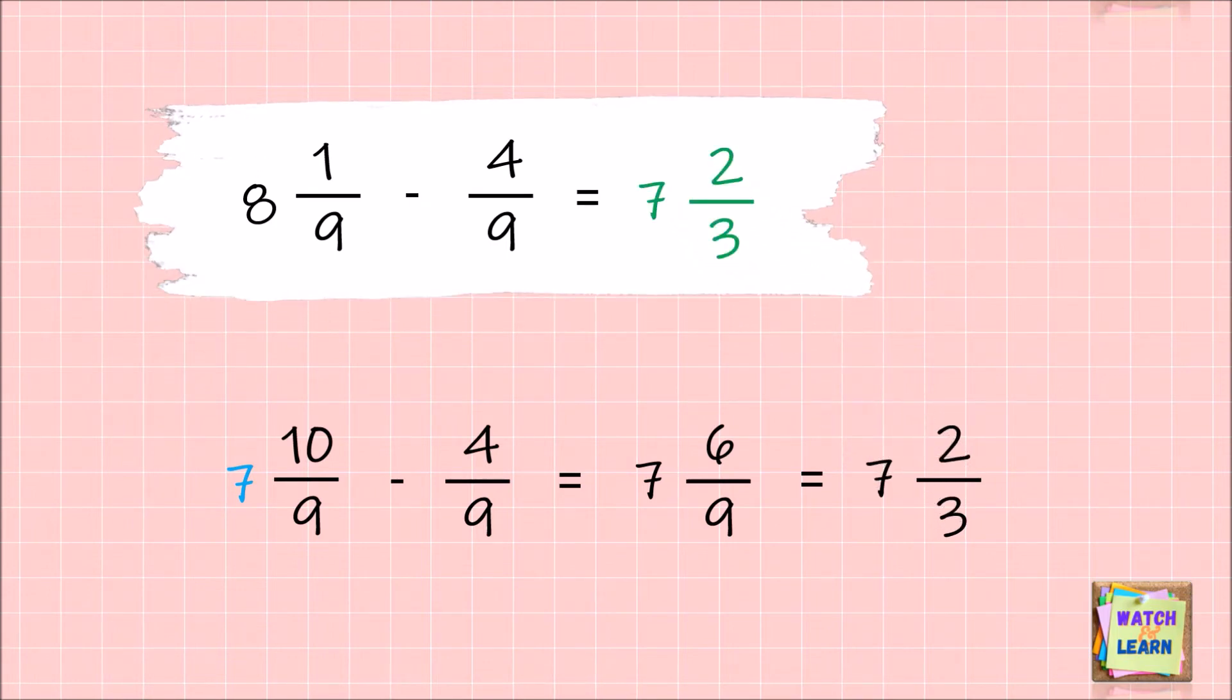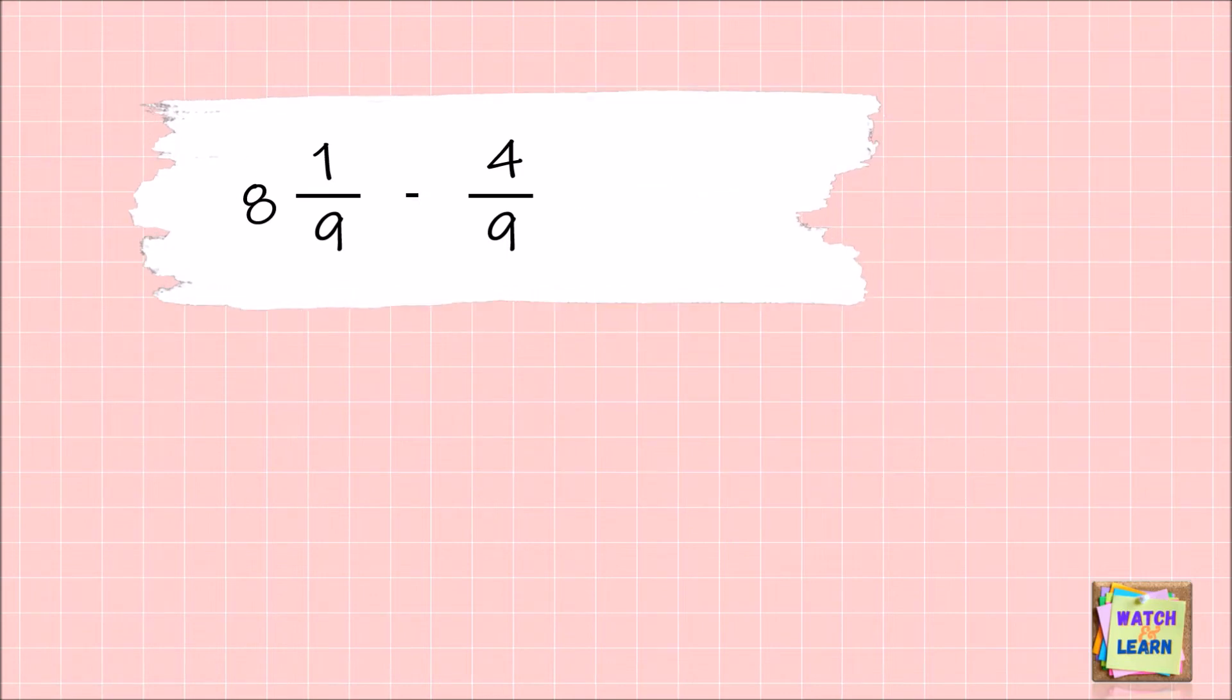But there is a simpler way to solve this problem. All you have to do is borrow one from eight, then add the denominator with the numerator and let the denominator stay as it is. This will give you the same result as before, which is 7 and 10/9. From there, you can see that the fraction in the minuend is enough to subtract the other fraction, then start solving.